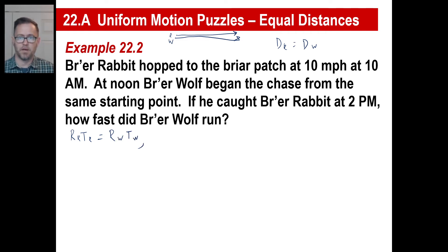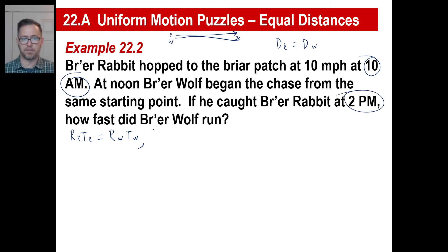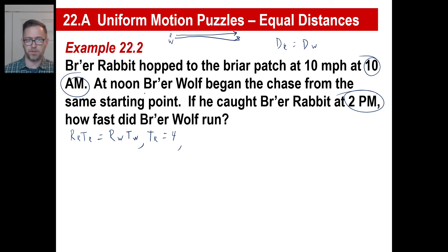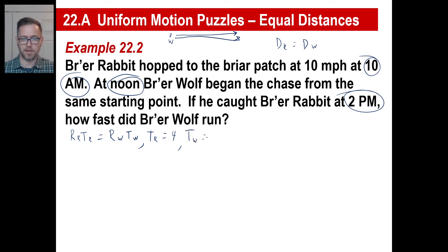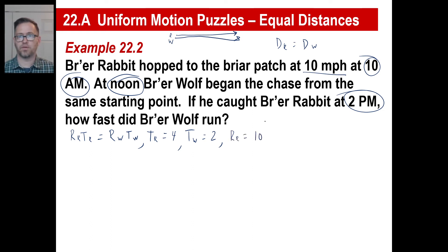One equation down, three to go. Brer Rabbit starts at 10 a.m. and ends at 2 p.m. — that's four hours. So the time of the rabbit is four. The wolf chases starting at noon, so his time is from noon to 2 p.m. — that's two. We're missing a rate. Brer Rabbit hopped at 10 miles per hour, so the rate of the rabbit is 10. There are our four equations.